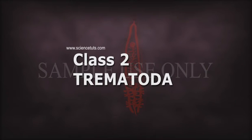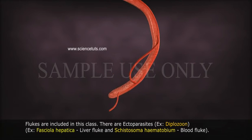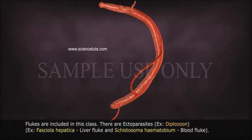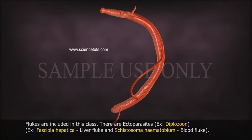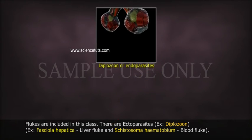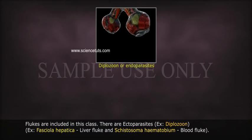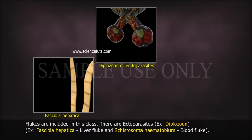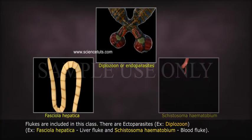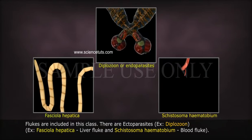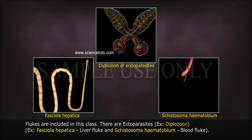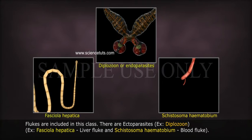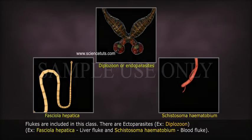Class II: Trematoda. Flukes are included in this class. These are ectoparasites. Examples include Diplozoon, Fasciola hepatica (liver fluke), and Schistosoma haematobium (blood fluke).